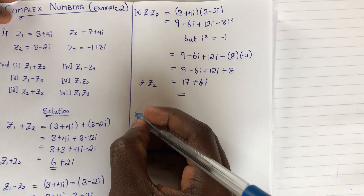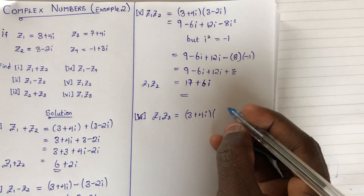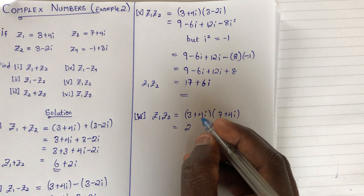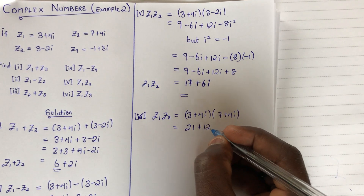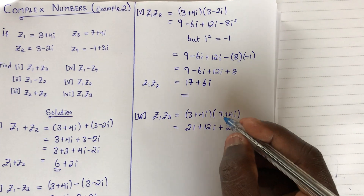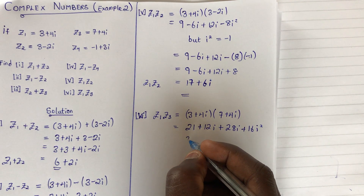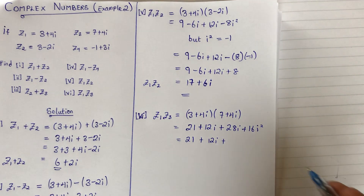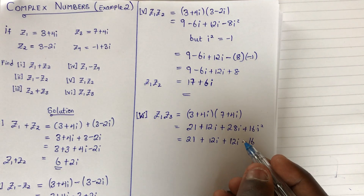Finally, z1 times z3: we have 3 plus 4i multiplying 7 plus 4i. Expanding: 3 times 7 equals 21, 3 times 4i equals 12i, 4i times 7 equals 28i, and 4i times 4i equals 16i squared. Since i squared equals negative 1, substituting gives minus 16. So we have 21 plus 12i plus 28i minus 16.